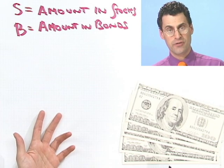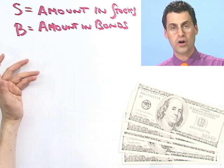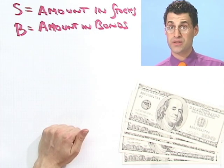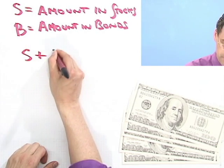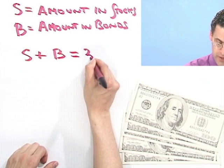So I need to write down all the things I know about S and B. Well, it turns out I know a couple things. First of all, what's their total? Well, their total is our entire investment, which was $3,000. So I know that S plus B equals $3,000.